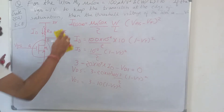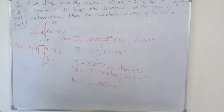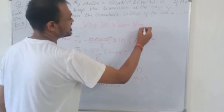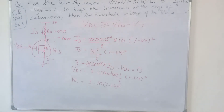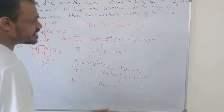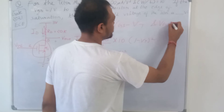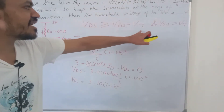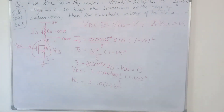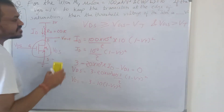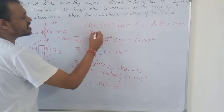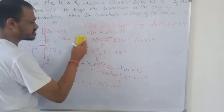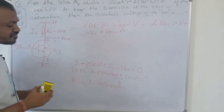For the saturation condition, VDS must be greater than or equal to VGS − VT, and VGS must be greater than VT. These are the two conditions for saturation. At the edge of saturation, VDS equals VGS − VT, so we substitute VDS = VGS − VT.